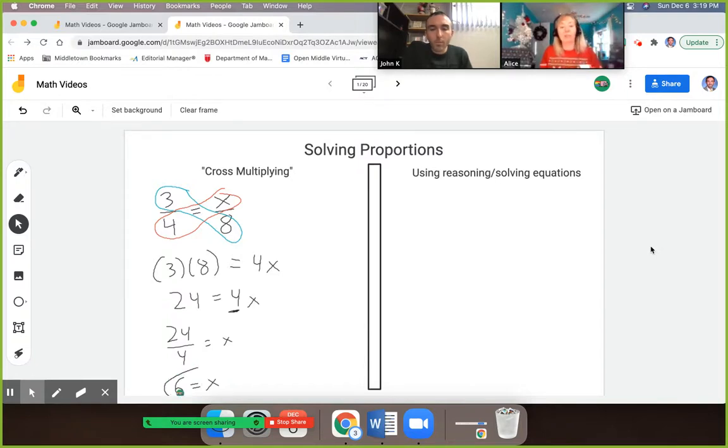Okay, so to me, cross-multiplying seems very straightforward. So, John, could you talk to why using reasoning to solve equations has advantages? Sure. One of the things we talked about in our Common Core video was the importance of coherence and building a conceptual understanding of problems through the K-12 continuum.